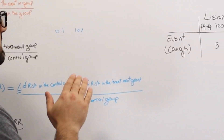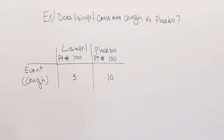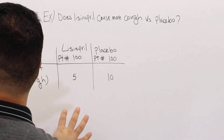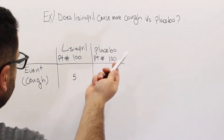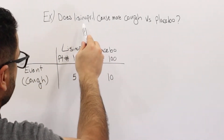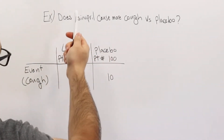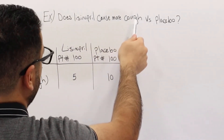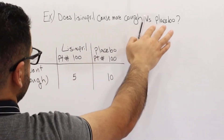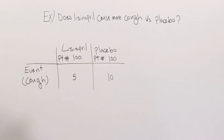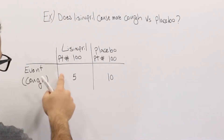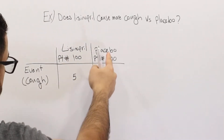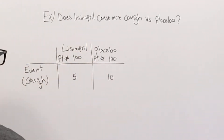Now let's jump into an example — the same one from the previous lecture — to better understand risk, relative risk, and relative risk reduction. We're asking: does lisinopril, an ACE inhibitor known to cause cough, cause more or less cough versus placebo? The number of events with lisinopril is 5 and with placebo is 10, with 100 patients in each group. Let's calculate risk first.